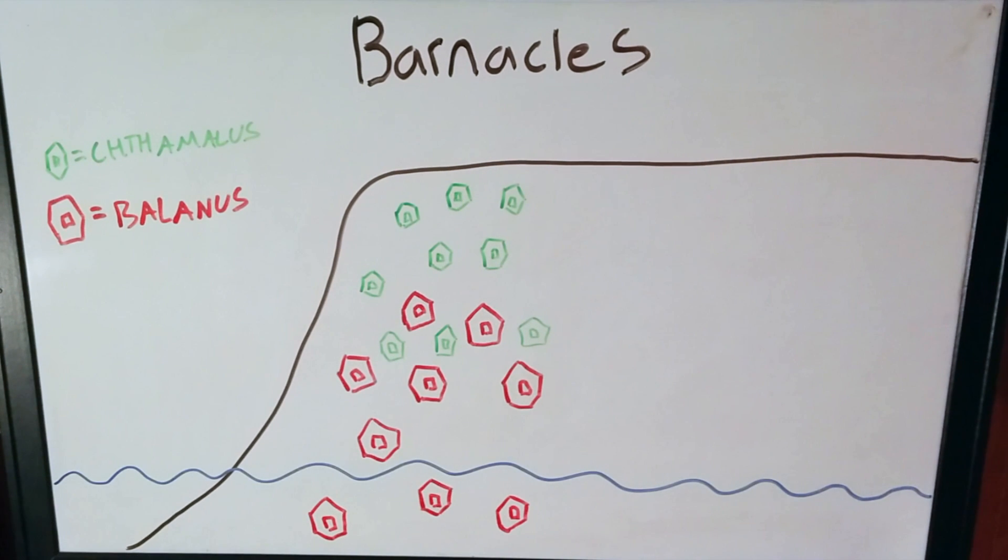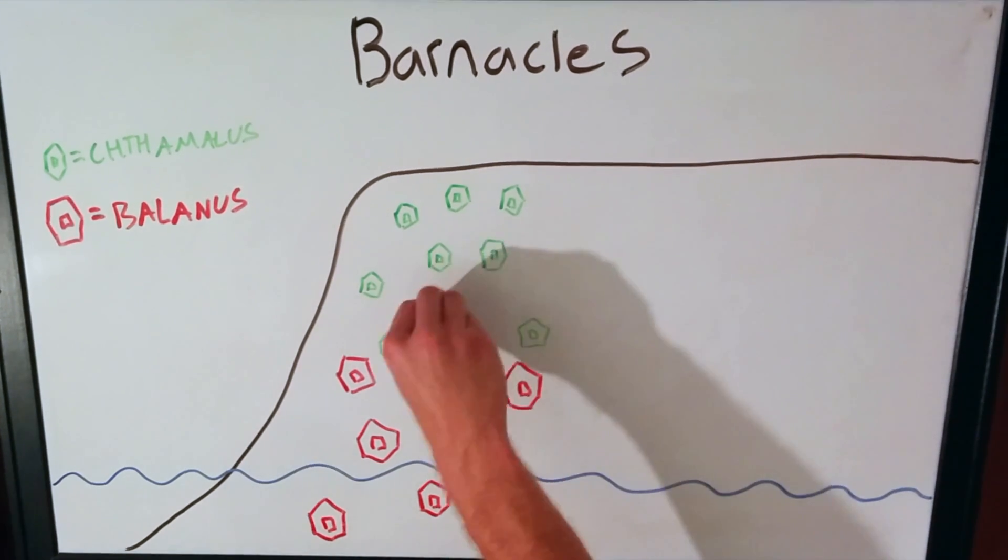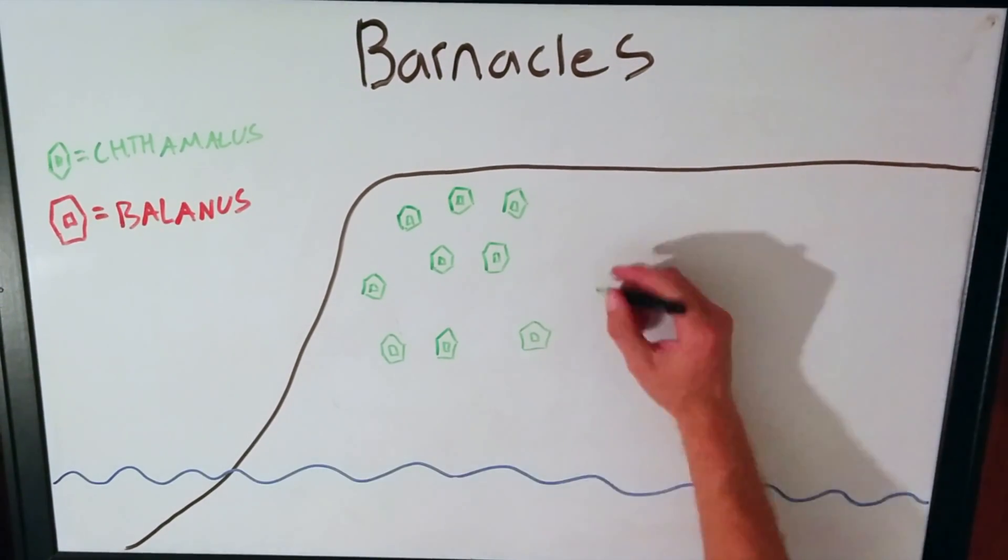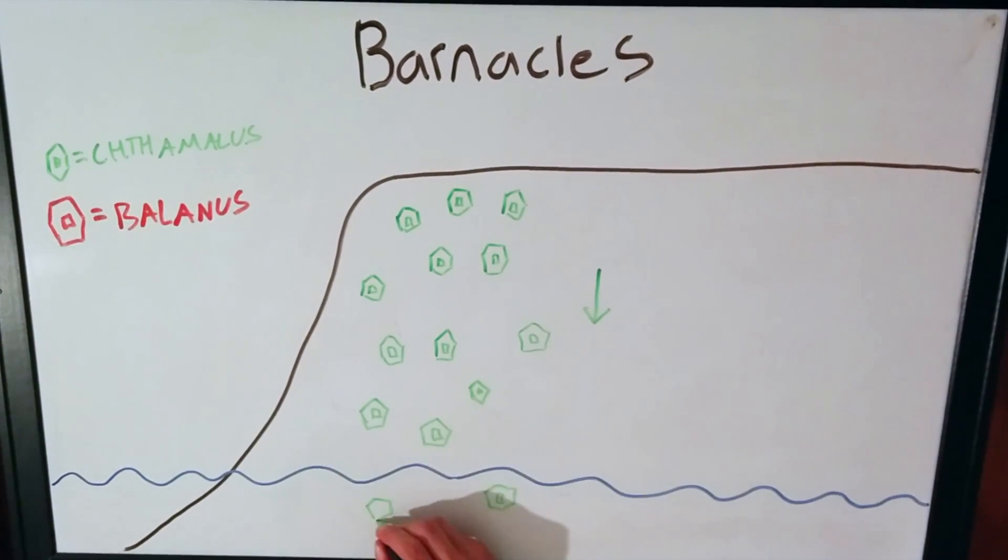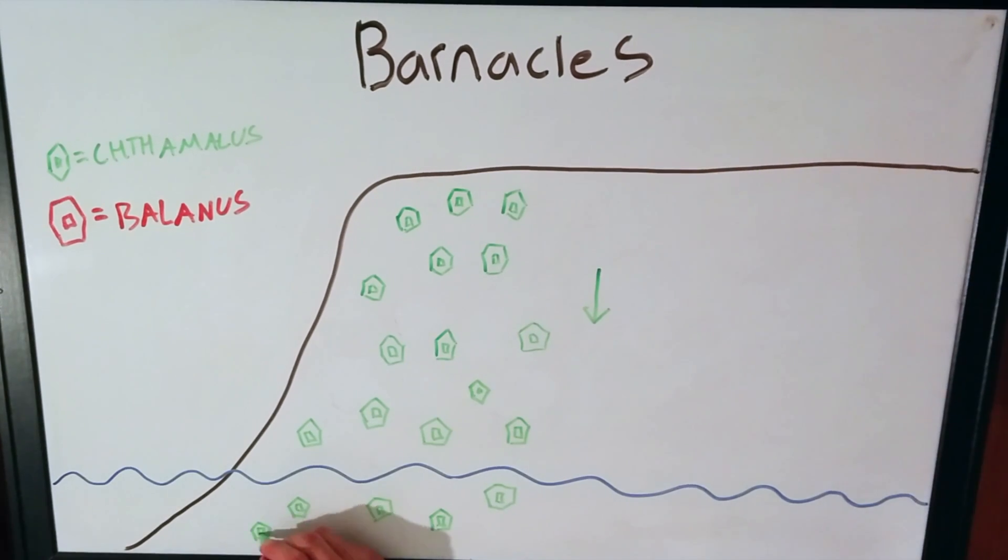As we see, there is a clear divide in bands where these barnacles live on the coast. But if we were to remove the bigger barnacles from the area, we would see the smaller ones would move down as they are no longer out-competed for space.